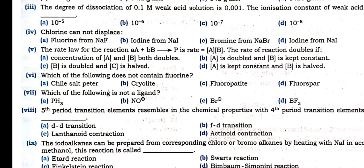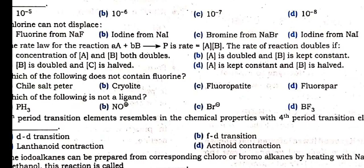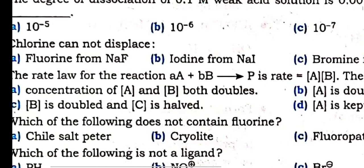The rate law for the reaction: A moles of A plus B moles of B gives product. The rate equals concentration of A and B. The rate of the reaction doubles when concentration of A and B both are doubled — because it depends upon both A and B. The answer will be option A: A and B double, then the rate of the reaction will be doubled.